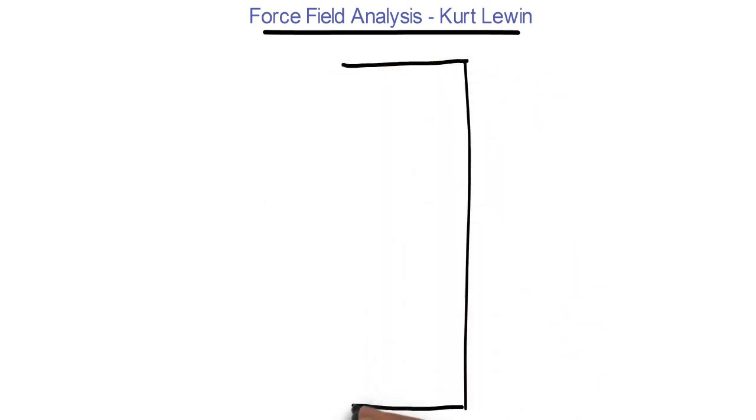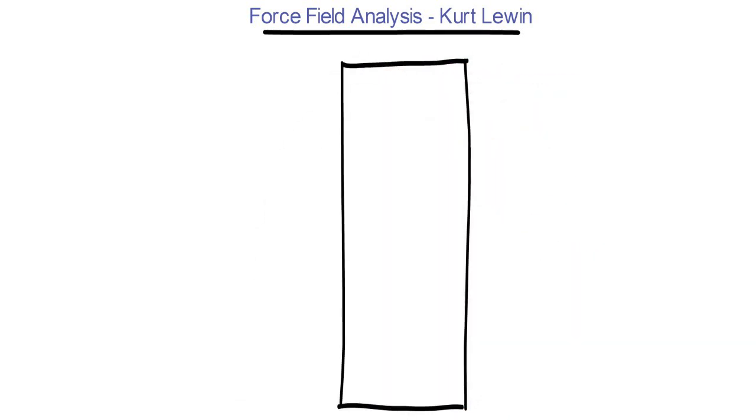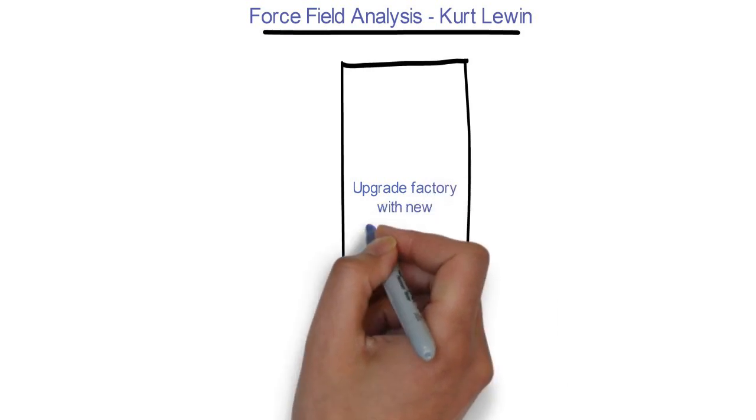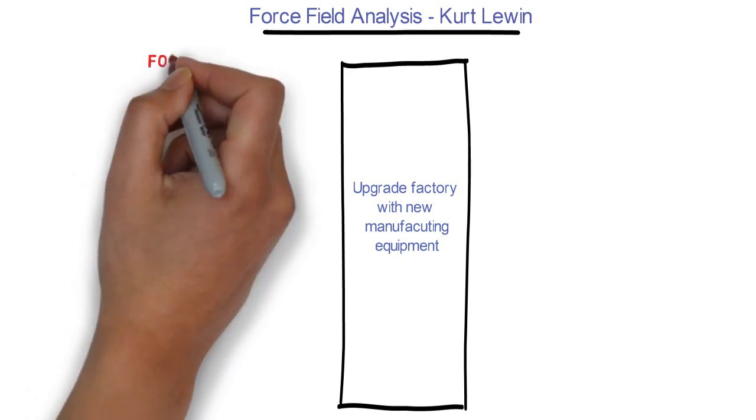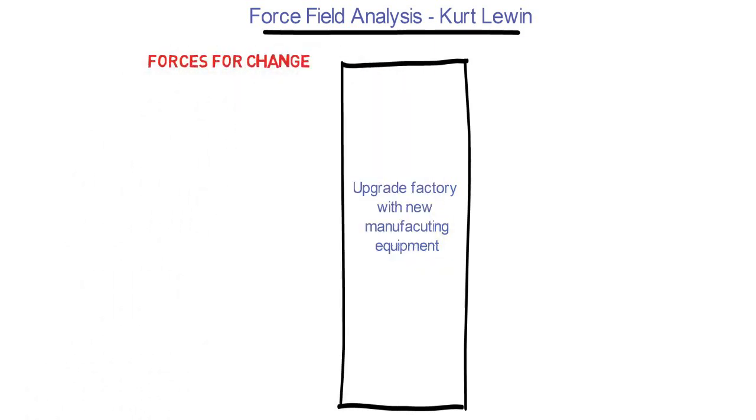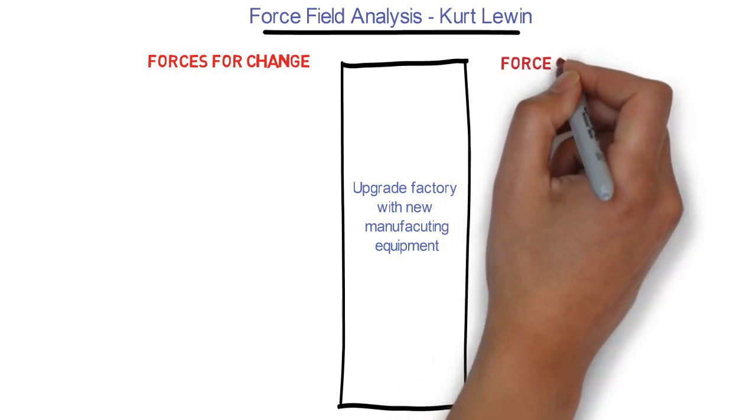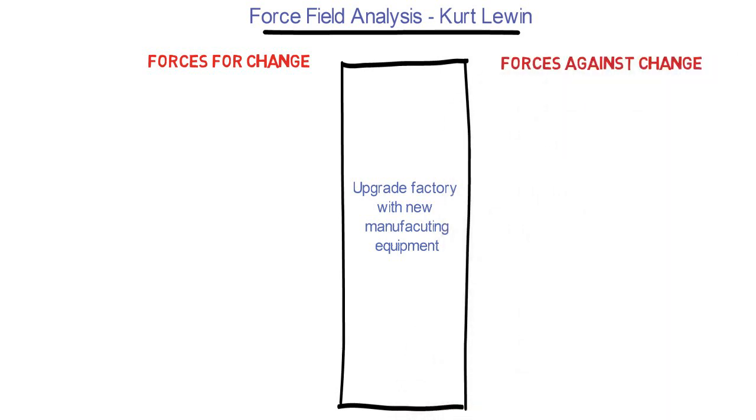To carry out a Force Field Analysis, use a blank sheet of paper or whiteboard. Then, describe your plan or proposal for change in a box in the middle of the paper. List the forces for change in a column on the left-hand side, and the forces against change in a column on the right-hand side.